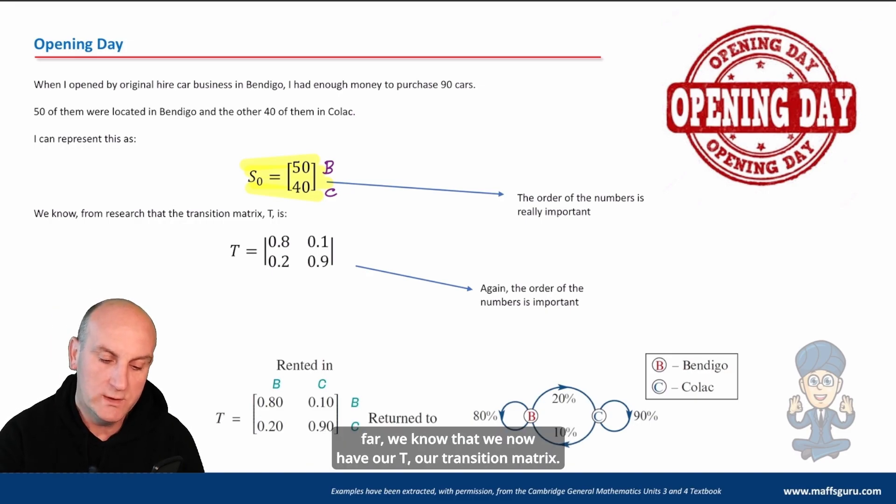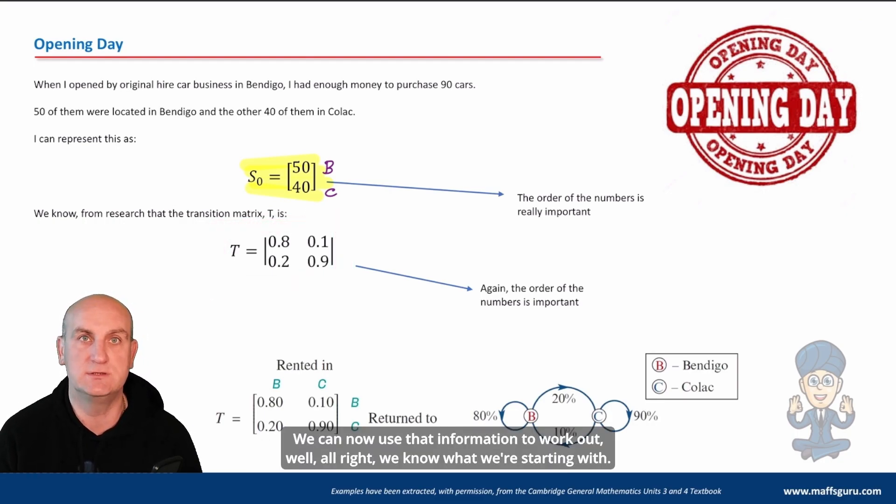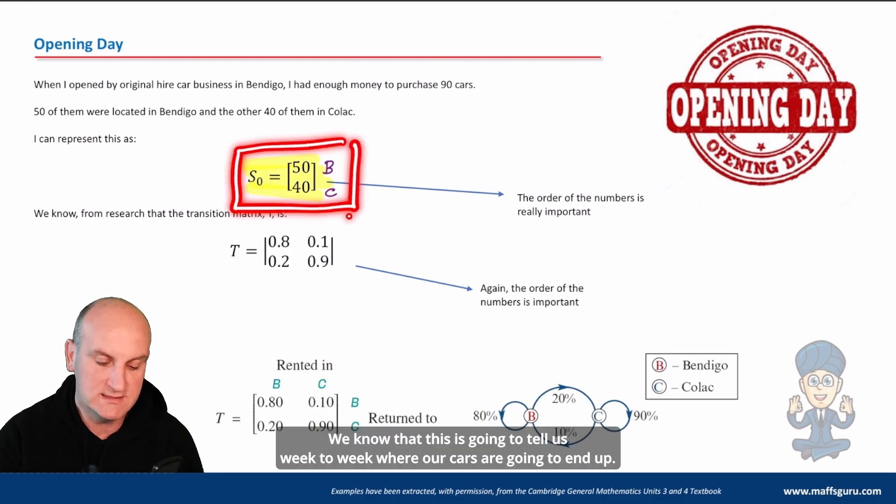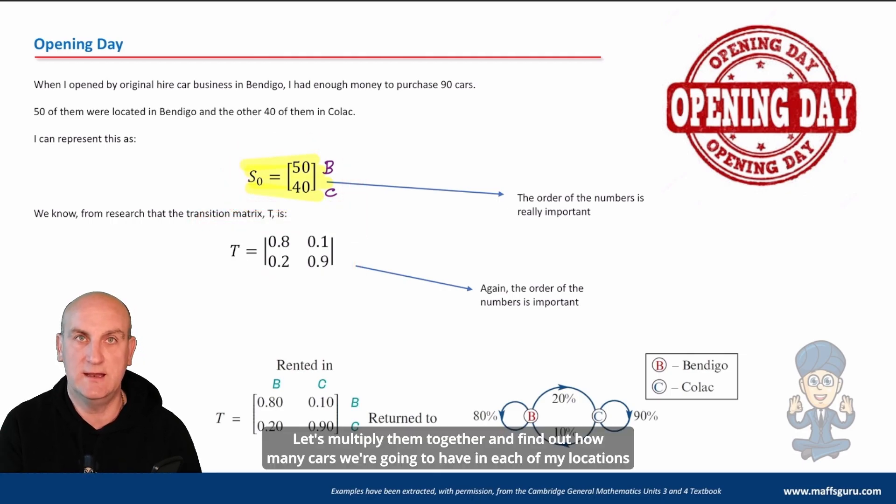From our research and from what we've done so far, we know that we now have our T, our transition matrix, and we're pretty much set to go. We can now use that information to work out, well, we know what we're starting with, we know that this is going to tell us week to week where our cars are going to end up. Let's multiply them together and find out how many cars we're going to have in each of my locations at the end of week one.